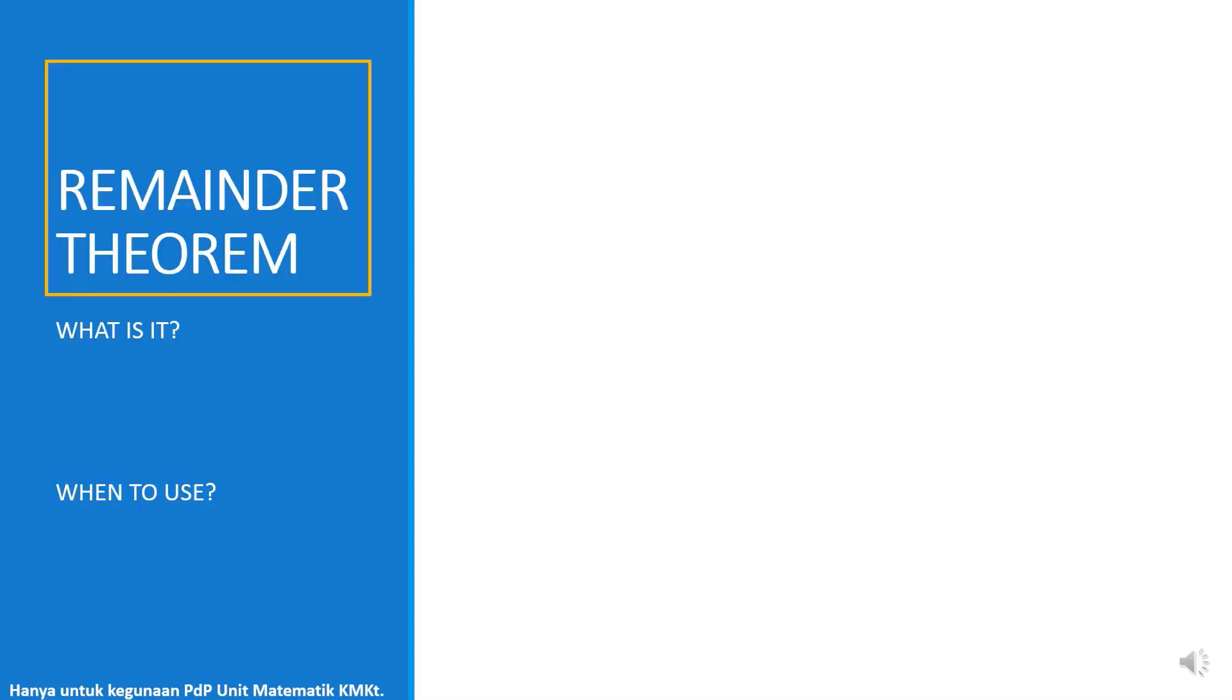Remainder Theorem. What is Remainder Theorem? If a polynomial P(x) is divided by (x - a), the remainder is P(a). Meaning, we substitute the value of a into polynomial and we get a constant. So, the constant is a remainder.